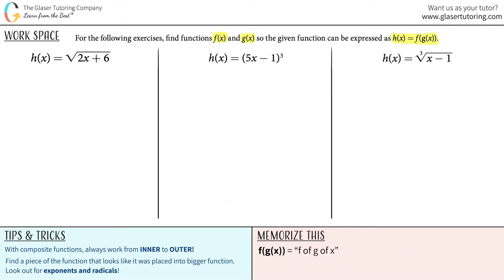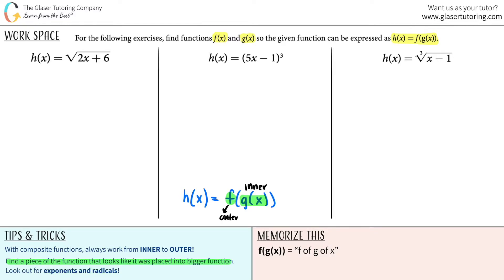They want h of x equals f of g of x, so it's super important to know which one is the inner function and which one is the outer function. Remember, the inner function is the one that's innermost within the parentheses — the g of x function is the inner function, trapped inside the f function, which is the outer function. Always look for the inner one first. The hint is: look for a piece of the function that looks like it was placed into a bigger function — watch for exponents and radicals.